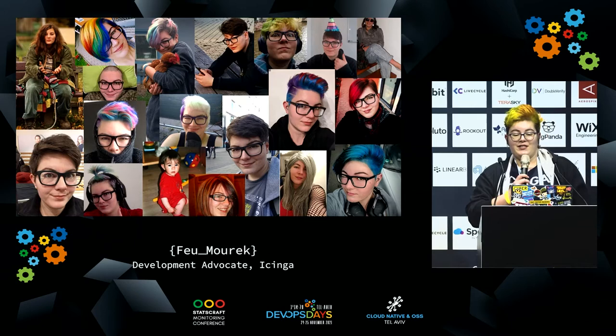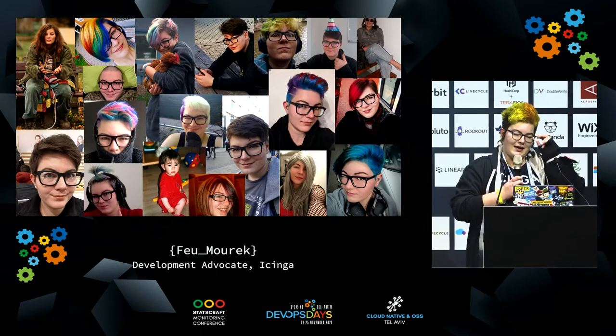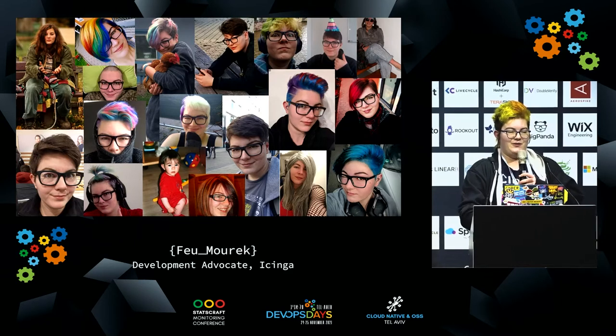Just for introductions, this is me in various different formats. My name is Foy Murek, my pronouns are they/them, and I work as a development advocate for Icinga. Icinga is a monitoring tool — some of you might have heard of it already. It's a fork of Nagios. I started out as a developer there, where I worked a lot in web development and did a lot of accessibility work, and now I'm more or less the development community interface, where I do talks and try to integrate people into the way we work.